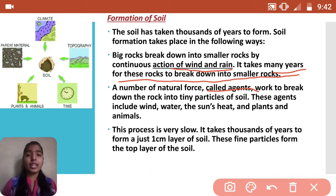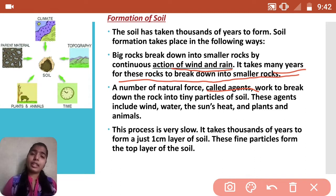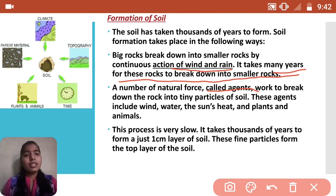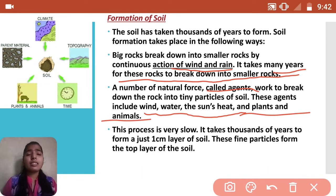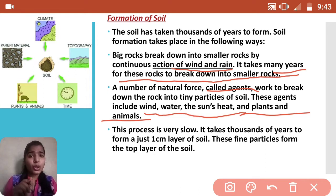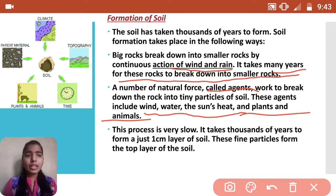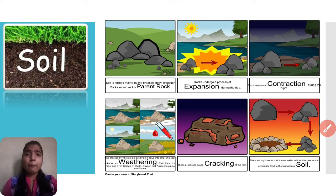A number of natural forces called agents - like wind, rain, Sun, animals, and plants - affect the big rocks and convert them into soil. First big rocks convert into smaller rocks, then smaller rocks convert into even smaller ones, and finally into soil. This process is very slow, and after thousands of years it makes only one centimeter layer of topsoil.